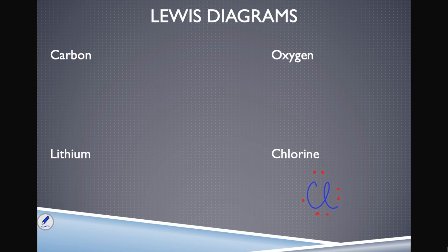Now carbon: atomic symbol C. Carbon is in group 14, so it has four valence electrons. I draw one on top, one on the right, one on the bottom, one on the left. Each side gets one electron before any sides pair up.